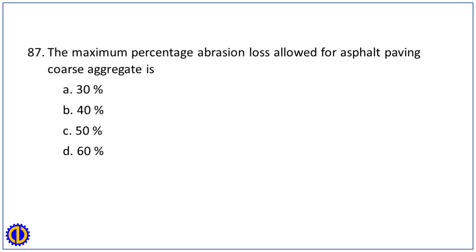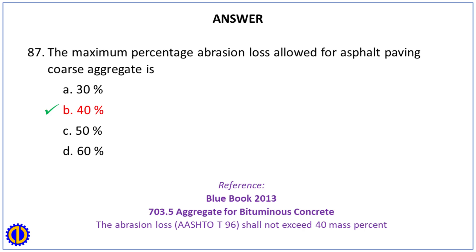Question 87. The maximum percentage abrasion loss allowed for asphalt paving coarse aggregate is: A. 30%. B. 40%. C. 50%. D. 60%. Answer: B. 40%. Reference: Blue Book 2013, 703.5 Aggregate for Bituminous Concrete — the abrasion loss (AASHTO T-96) shall not exceed 40 mass percent.